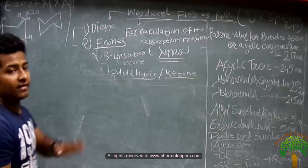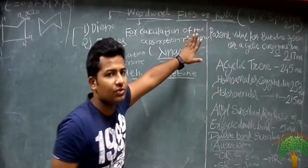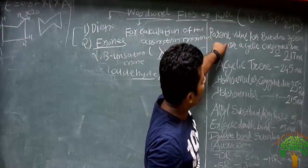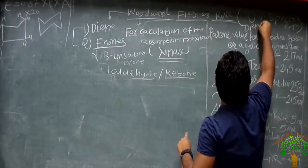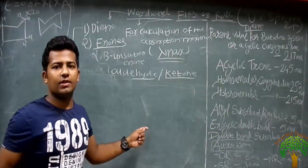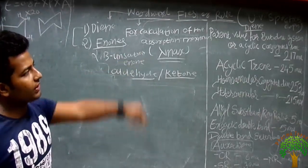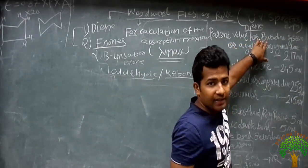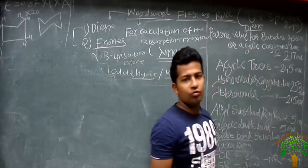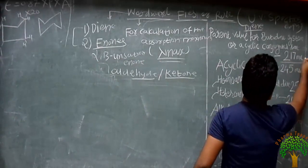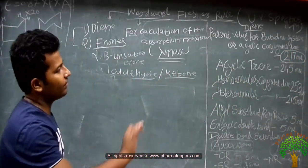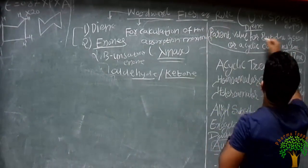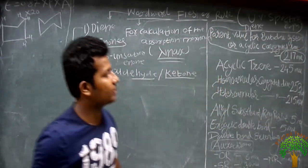Now let's see what are the different values to calculate the lambda max of any given diene structure. For the parent value of a diene system or a cyclic conjugated diene system, the lambda max value is 270 nanometers. For example, butadiene — CH2=CH-CH=CH2 — has a value of 270 nanometers. For a cyclic triene, the value is 245 nanometers. Please remember these values, as they are not given in many books.